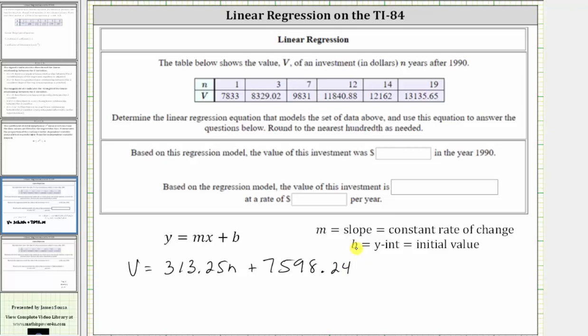And now let's take a look at our questions. First, based on this regression model, the value of the investment was how many dollars in the year 1990. We'll notice n is the number of years after 1990, so we call 1990 the base year, which means n equals zero represents the year 1990.